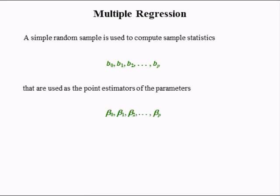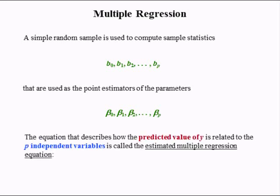The b's are used as the point estimators of the unknown parameters. b0 is the true intercept of the model; b1 to bp are the true slopes of the model. The b's are like mu and sigma — they're unknown. The b's are like x bar and s; we can use the sample data to compute them. The equation that best describes how the predicted value of y is related to the p independent variables is called the estimated multiple regression equation. The predicted value of y is denoted y hat, and it equals b0 plus b1 times x1 plus b2 times x2 plus bp times xp.